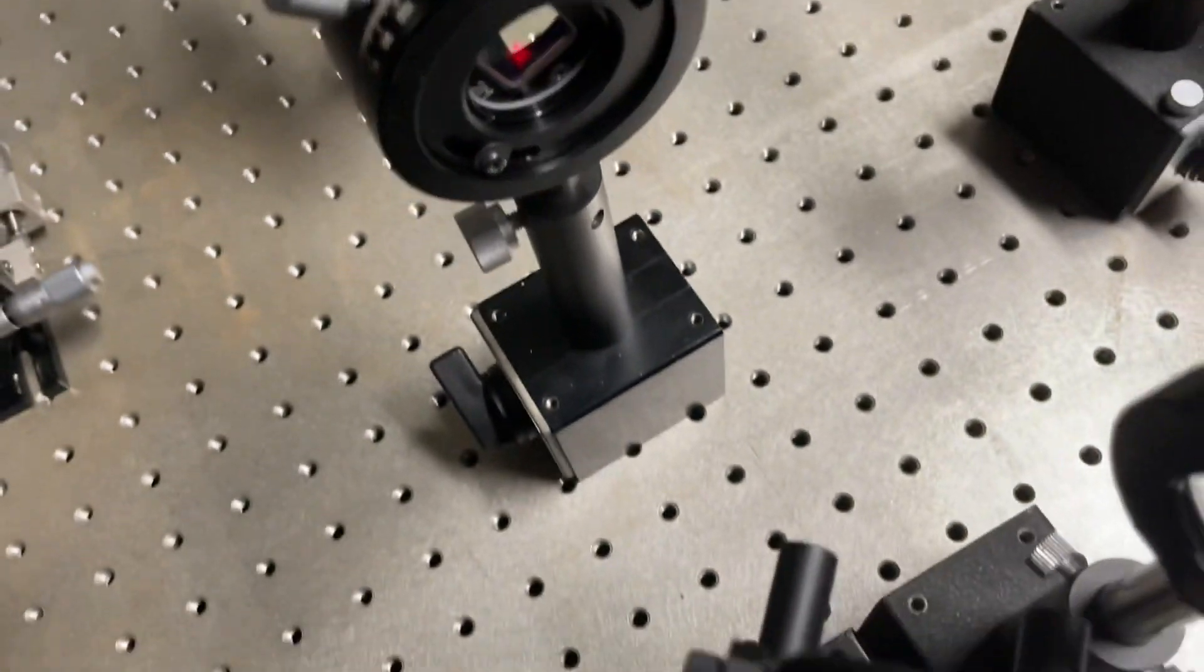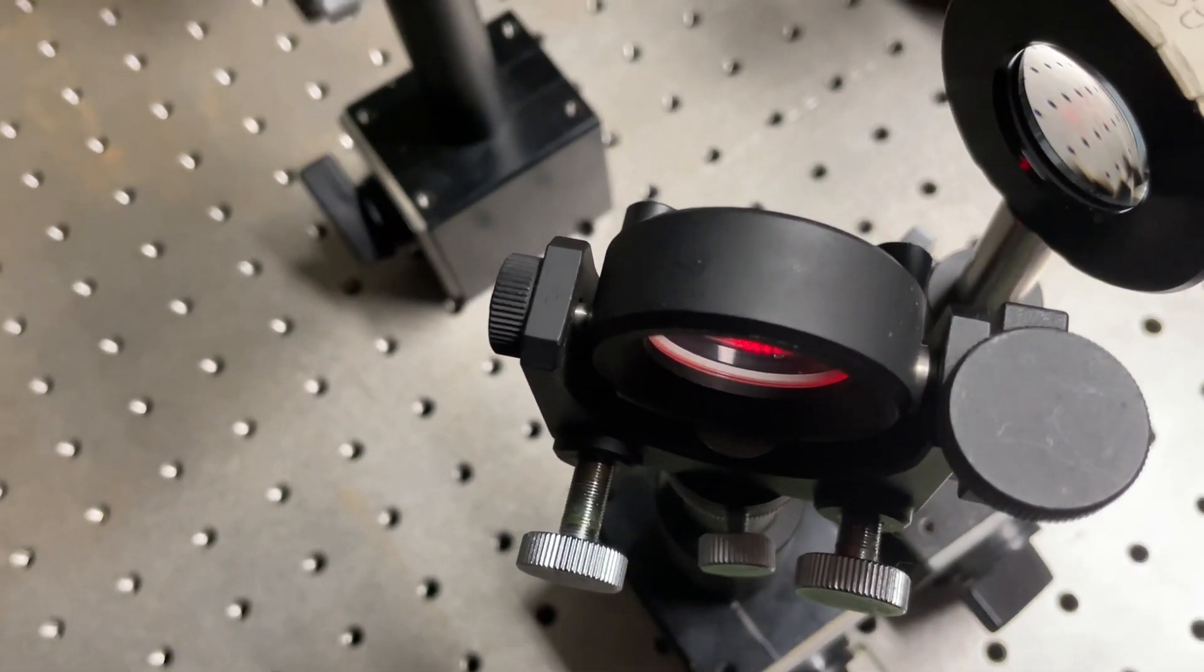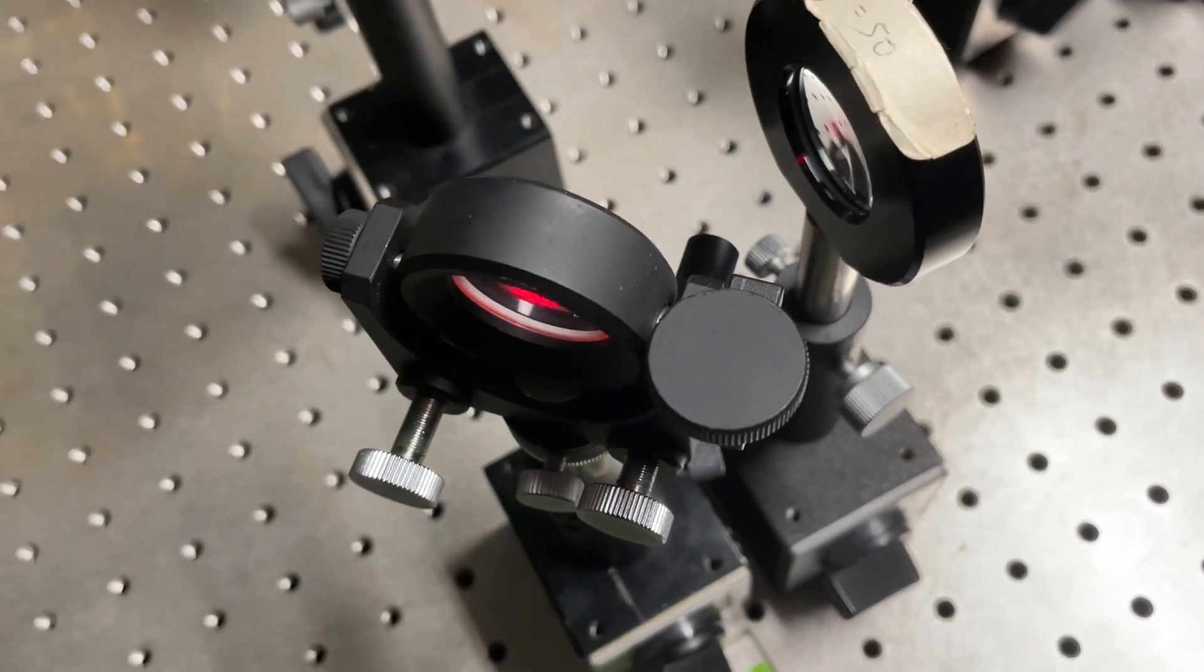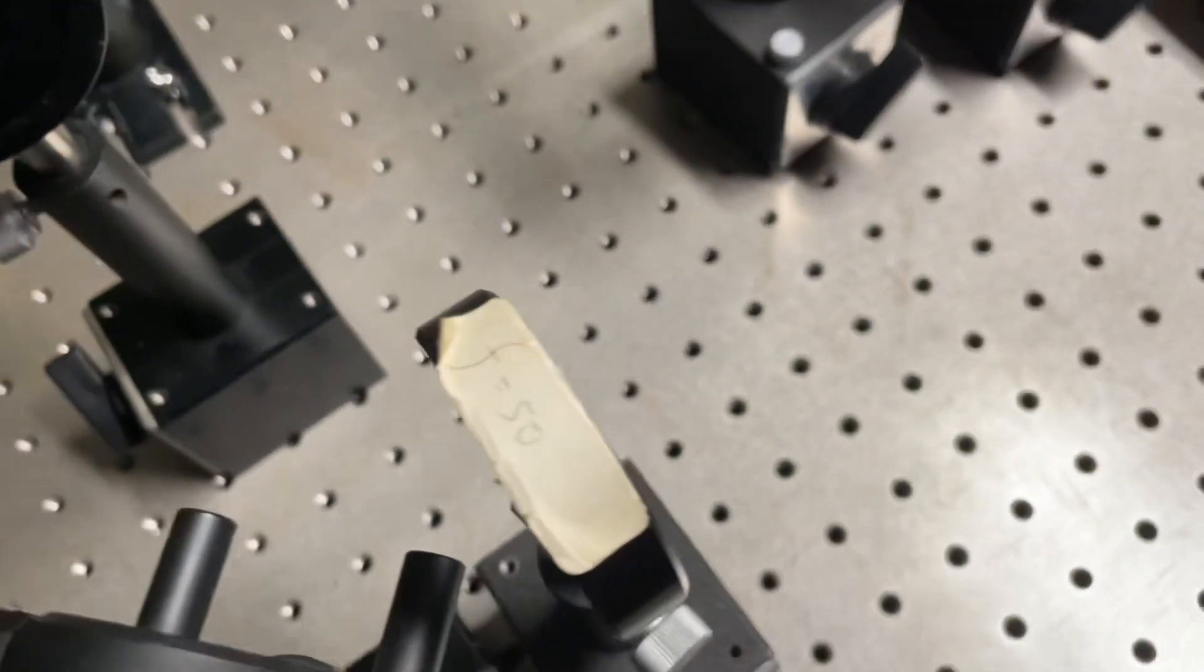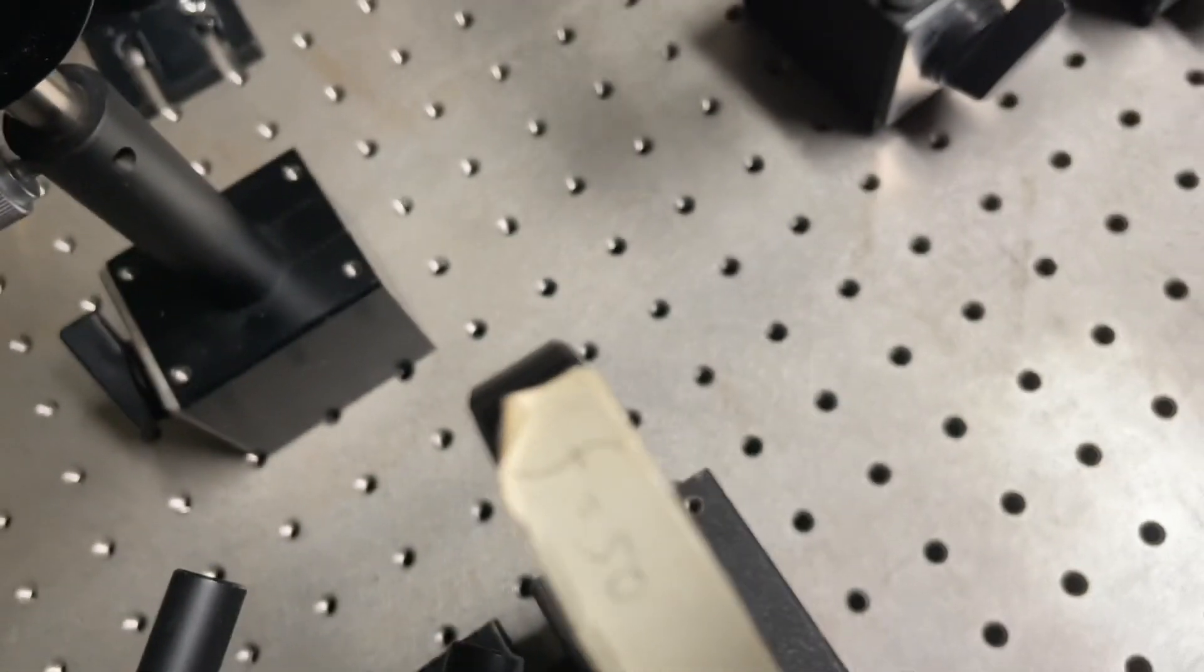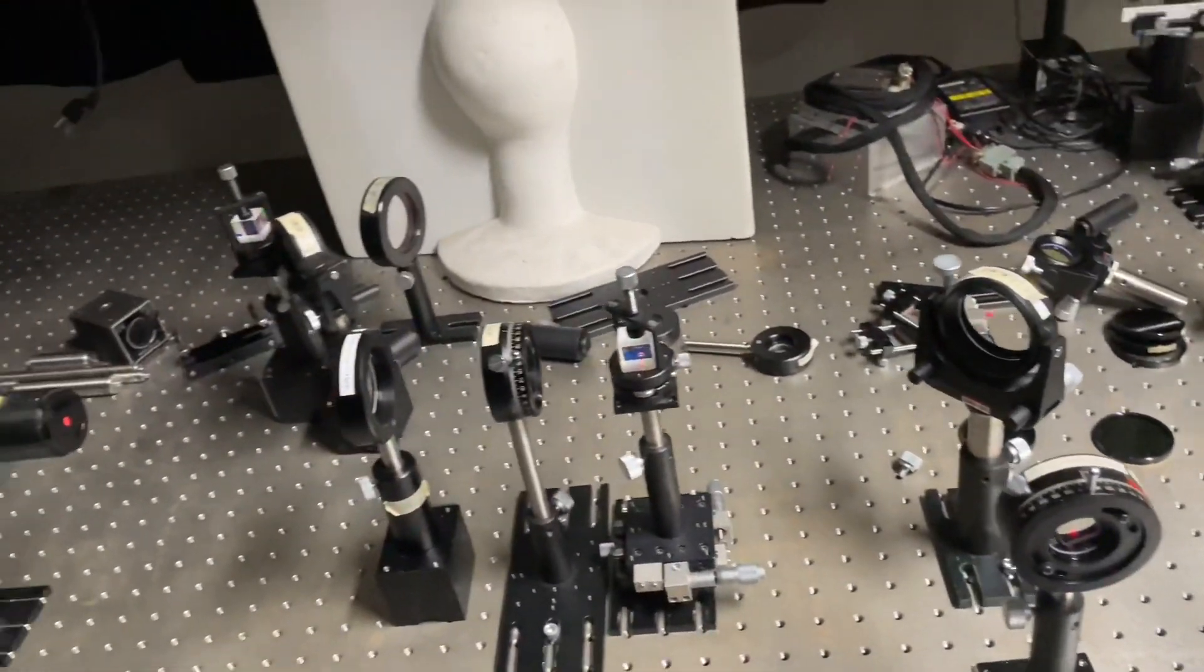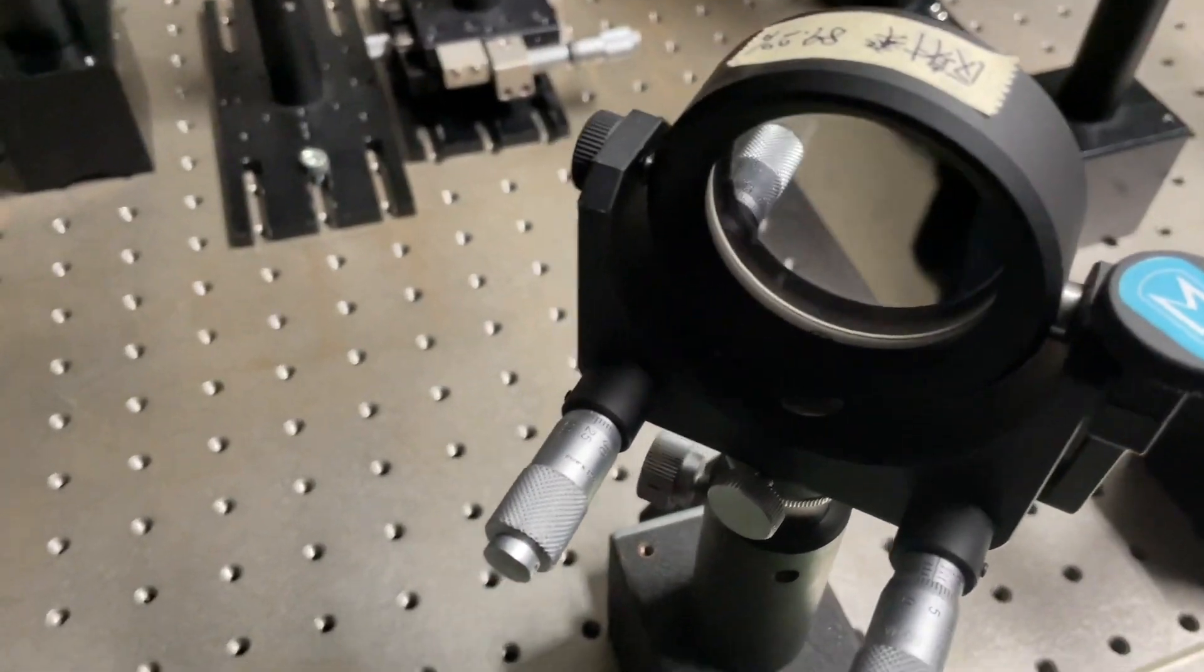And on the right, this is a 50-50 non-polarizing beam splitter which 50% transmits and 50% reflects. Then we've put another mirror.